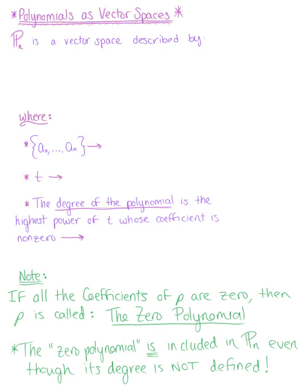We've been looking at examples where a set V subscript is not a vector space, so I want to introduce you to our first example of something that is a vector space. This is a unique case — we have polynomials as vector spaces.